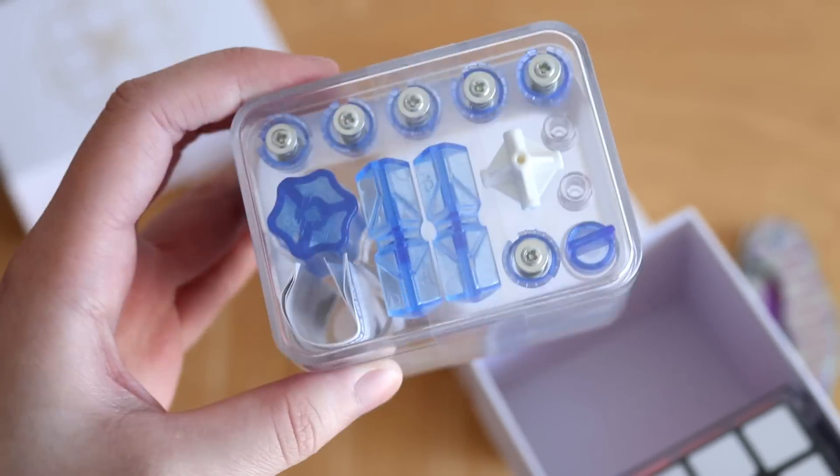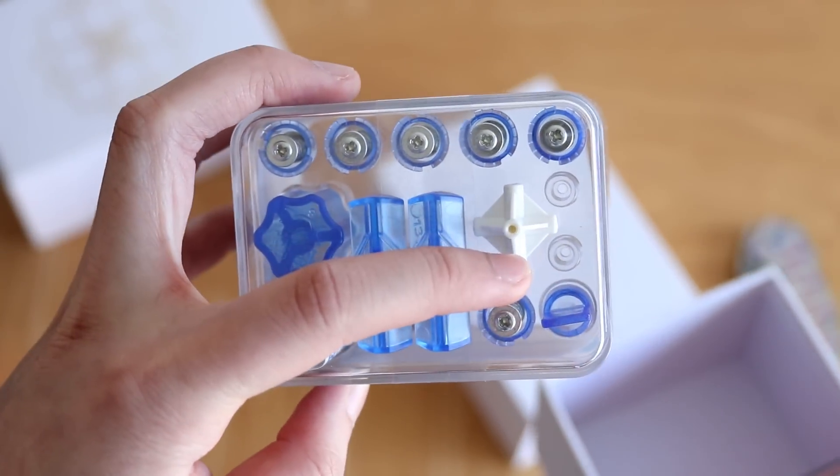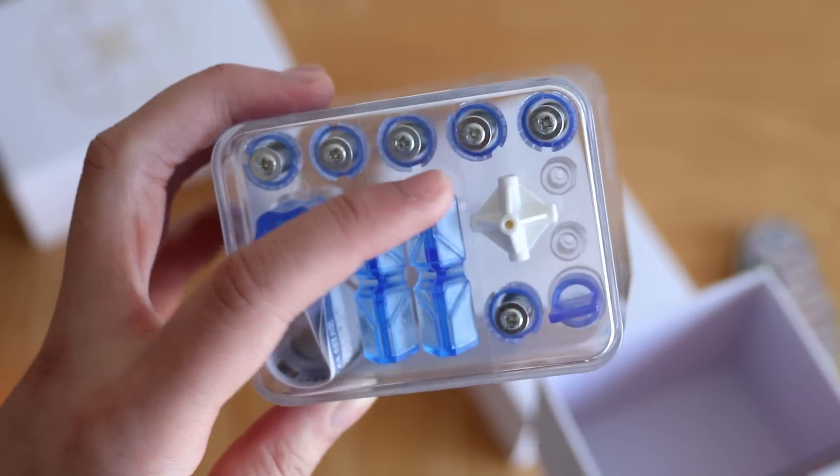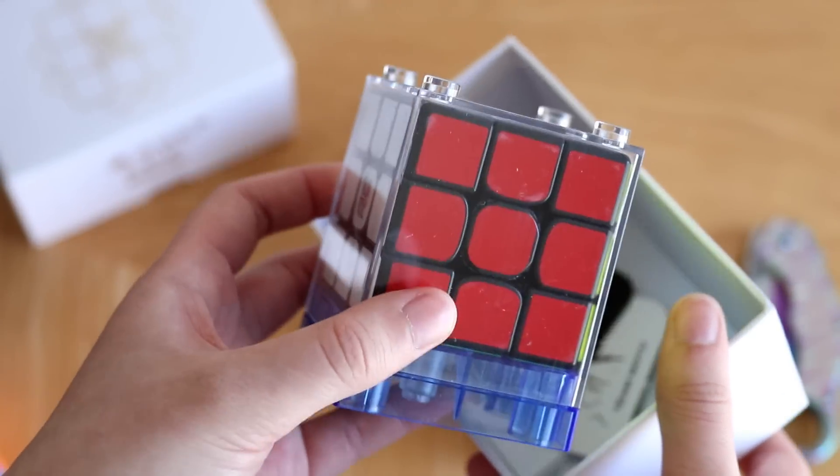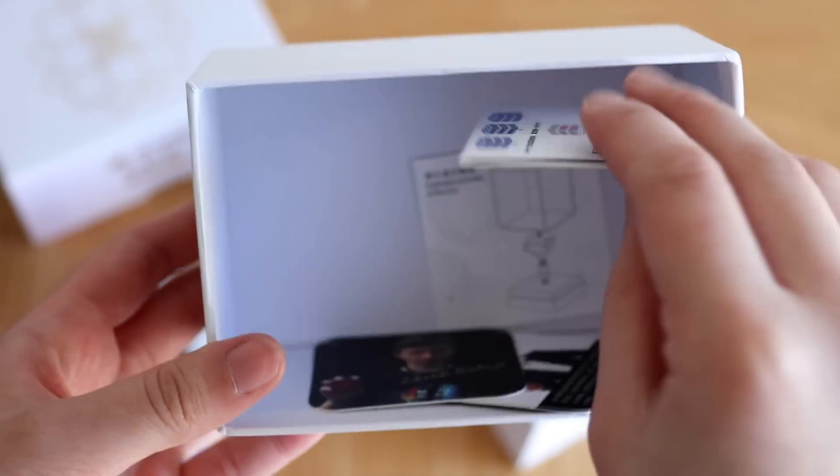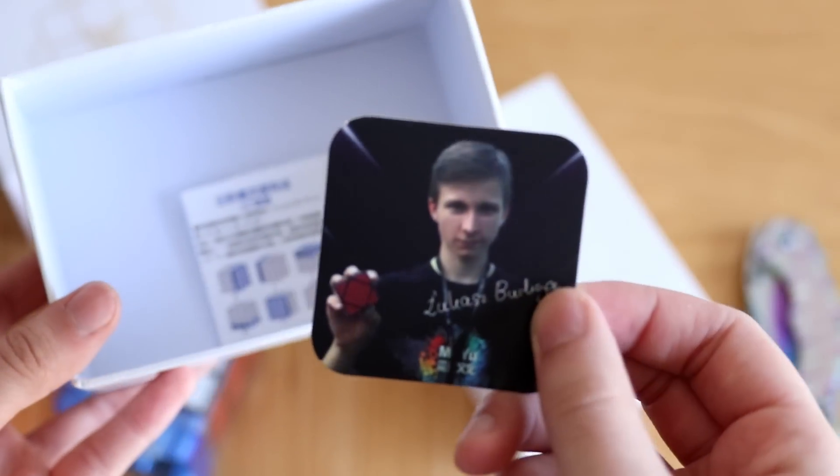Alright, so it looks like we have an accessories box, and in here we have a spare core, some of those tensioning tools, a screwdriver, and also a replacement set of hardware which is really cool to have on hand. Of course we have the cube and a really nice little display box. At the bottom of the box we have the typical instruction manuals and also team Moyu cards.